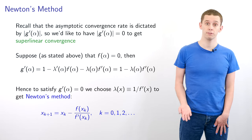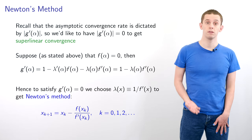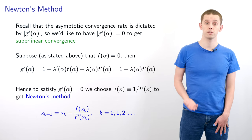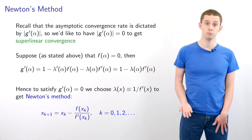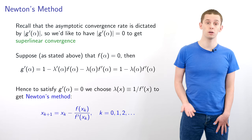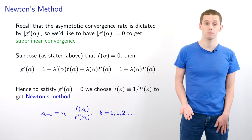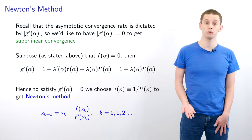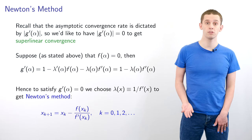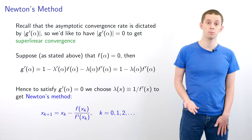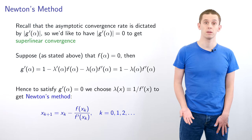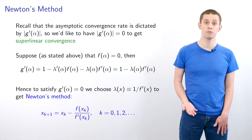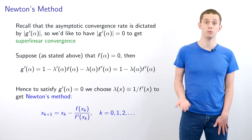Suppose now that f(alpha) = 0. Then g'(alpha) = 1 minus lambda'(alpha)f(alpha) minus lambda(alpha)f'(alpha), which simplifies to 1 minus lambda(alpha)f'(alpha). Hence, to satisfy g'(alpha) = 0 we could choose lambda(x) = 1 / f'(x). Surprisingly, this leads us to Newton's method: x_{k+1} = x_k minus f(x_k) divided by f'(x_k). So we see that Newton's method can be justified through this alternative logical derivation.